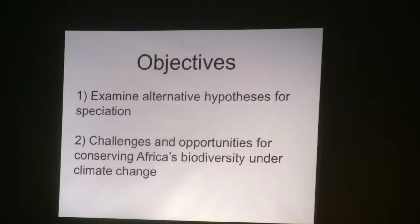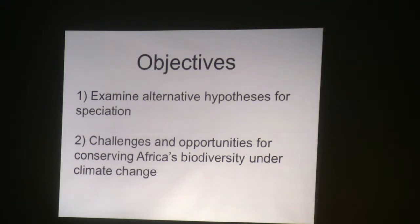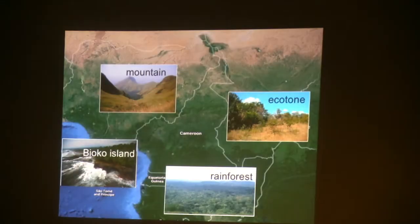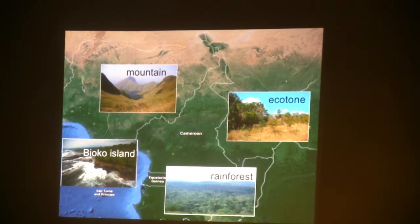The objectives for this portion of the talk are to examine alternative hypotheses for speciation and then get into the challenges and opportunities for conserving biodiversity under climate change — ensuring we maintain and promote natural evolutionary processes. The species I started working on is the Little Green Bulbul, which I began in 1989 while still working on seed crackers. This species occurs in many different habitats — from mountain habitats on islands like Bioko to both rainforests and ecotone — so you capture the entire gradient by looking at this species.